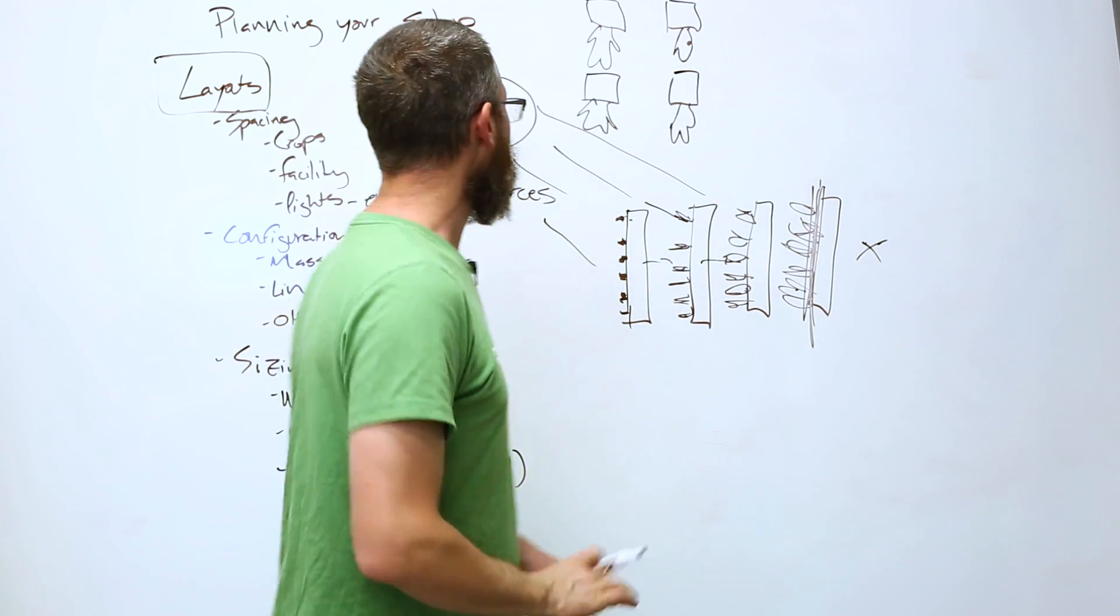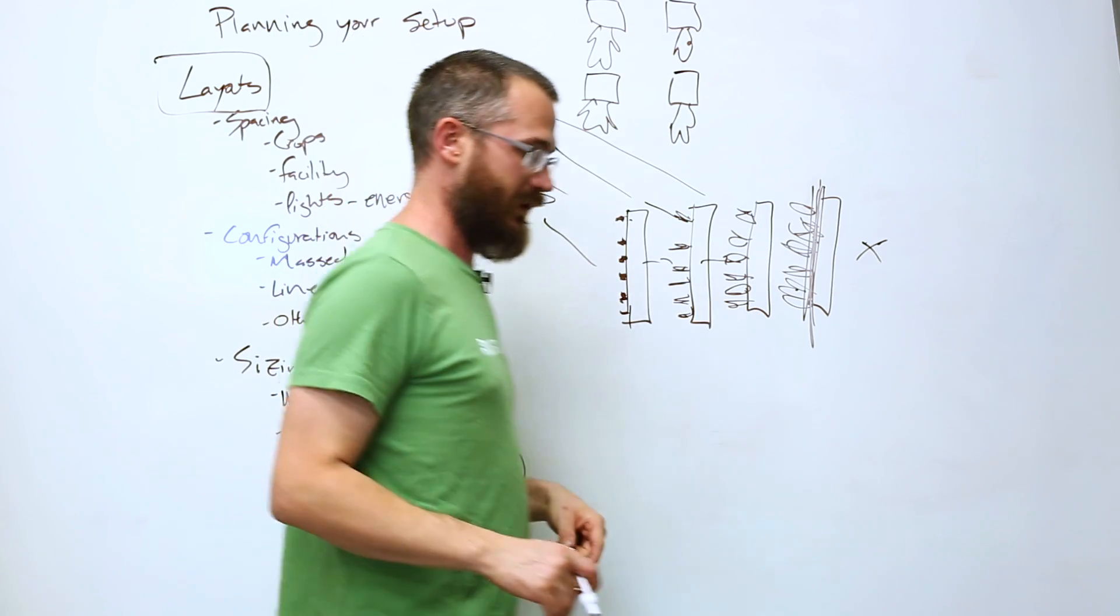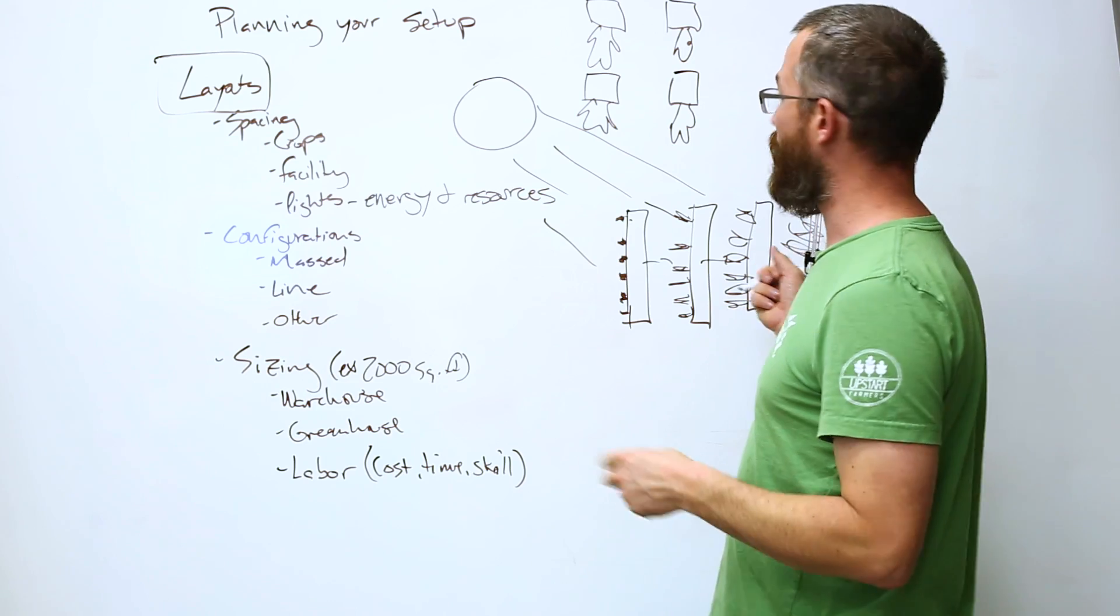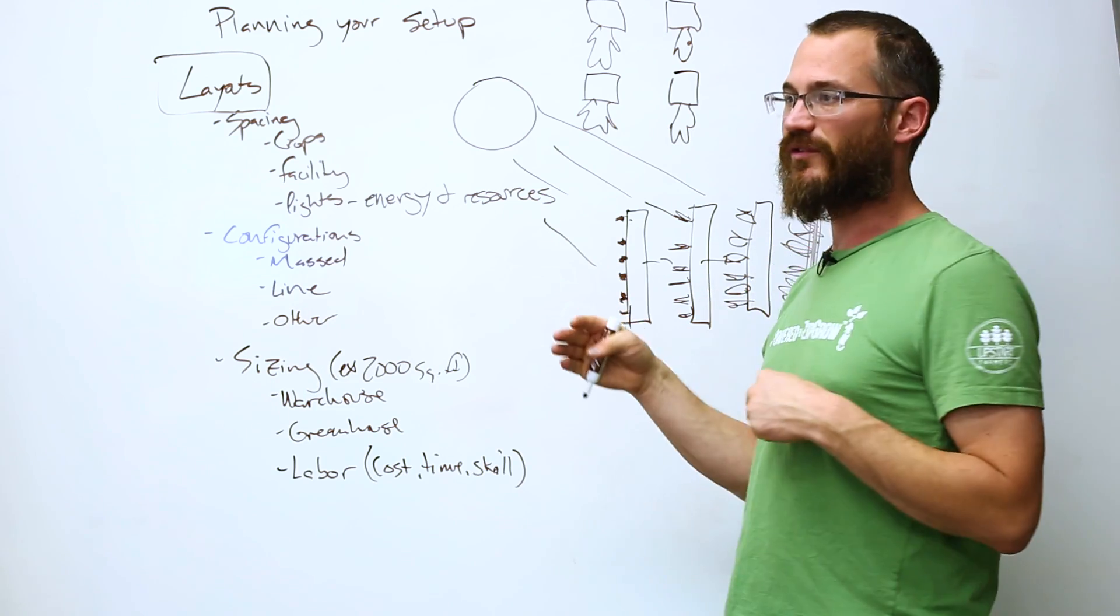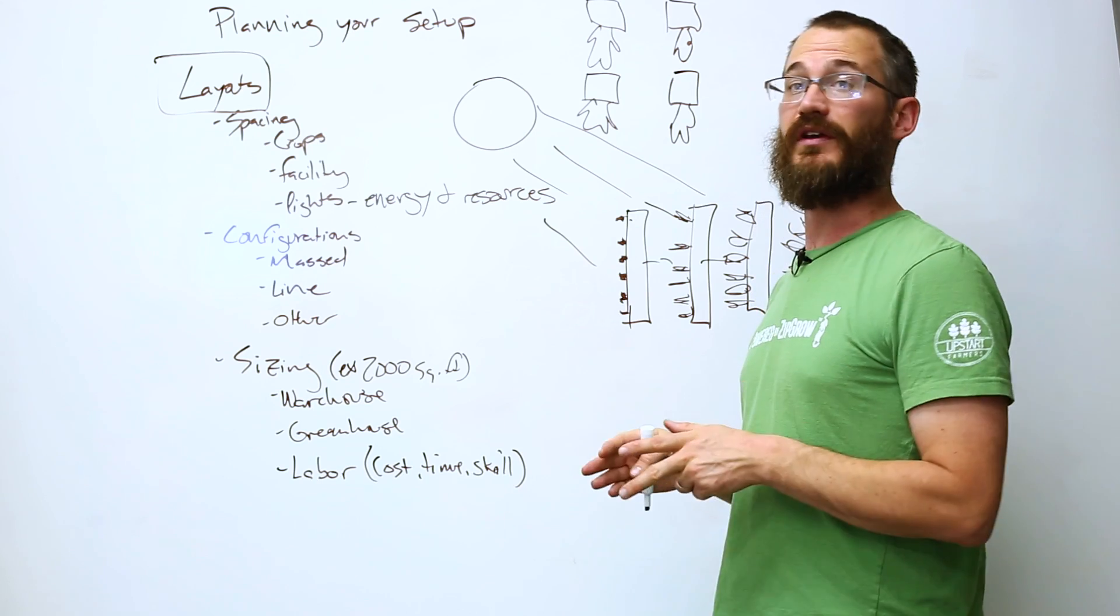So spacing is really important. Now the rule of thumb with ZipGrow towers is usually between 18 and 22 inches, side to side and back to back, center to center, okay?